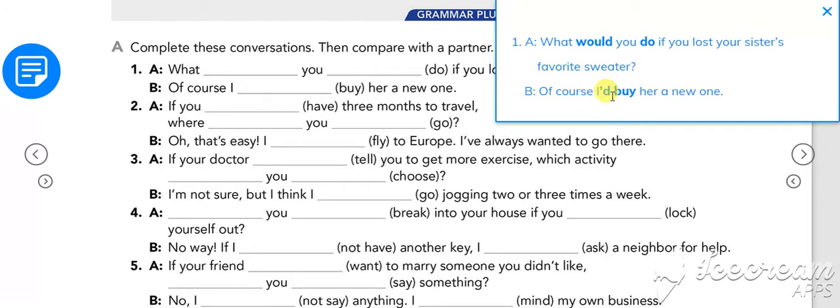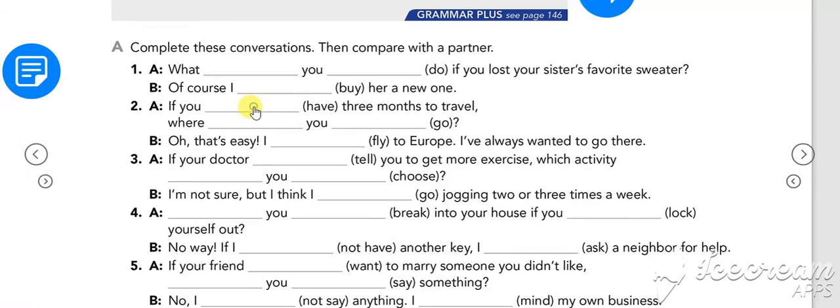This apostrophe D means would. Remember would represents something imaginary, something that hasn't passed.